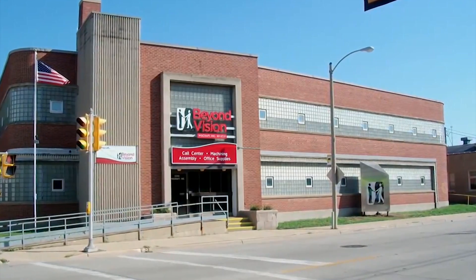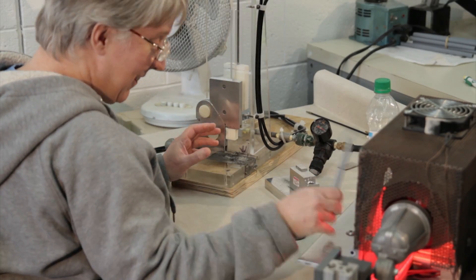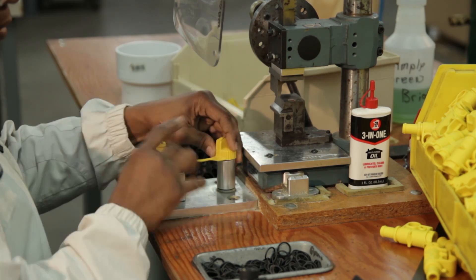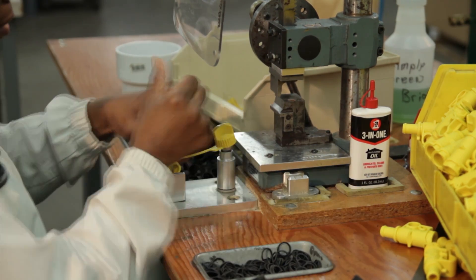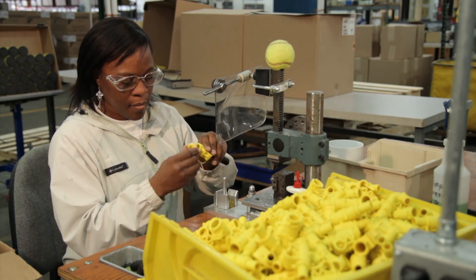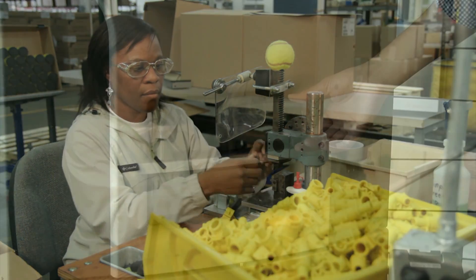Beyond Vision is a social enterprise and our mission is to provide employment to people who are blind. As a manufacturing services company, we are a lean organization and we find ways to mistake-proof, or what they call poka-yoke using lean terminology. We take poka-yoke to a different level here.